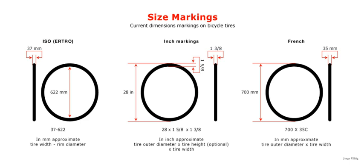Wired-edge tires can be mounted on straight-side or crochet-type rims. Such tires are designated with their nominal width and their nominal rim diameter, separated by a hyphen. Both are measured in millimeters.